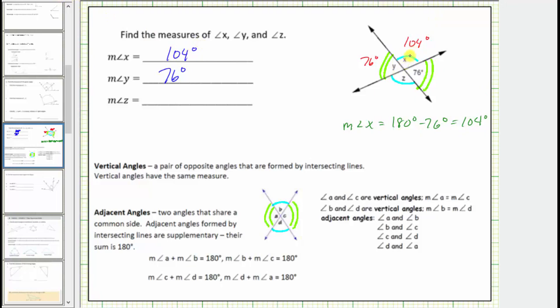Finally, angle X and angle Z are vertical angles and therefore have the same measure. The measure of angle Z must be 104 degrees.